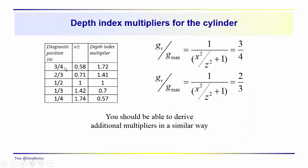So, following the same procedure, we could let the shape term equal three-quarters. We could let the shape term equal two-thirds. We could come up with all these values of X over Z. We know when we take the reciprocal of that, we get the depth index multiplier. So, you should be able to derive the depth index multiplier in the case of X_3/4, we would multiply that distance by 1.72 in order to get Z.